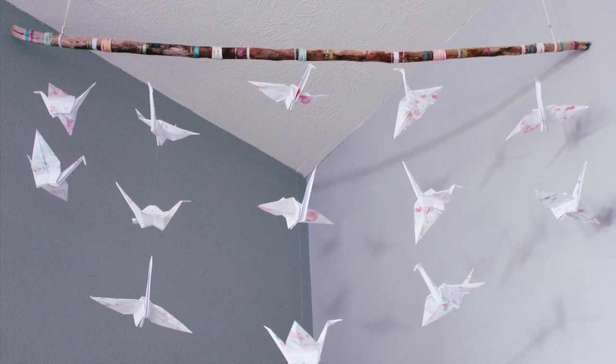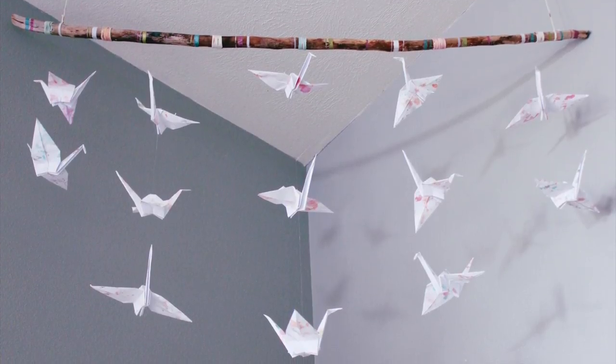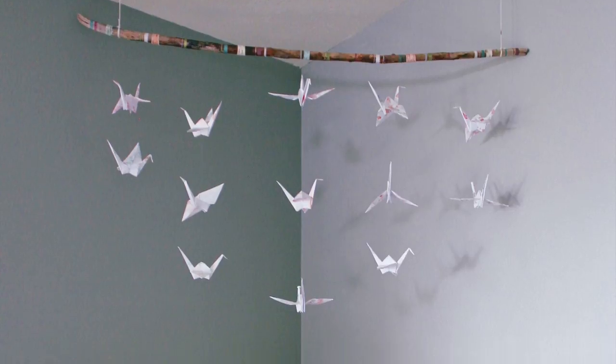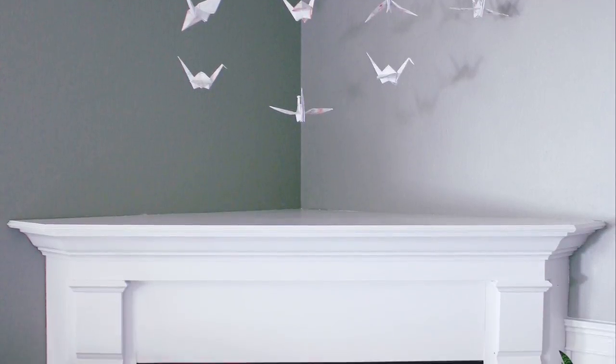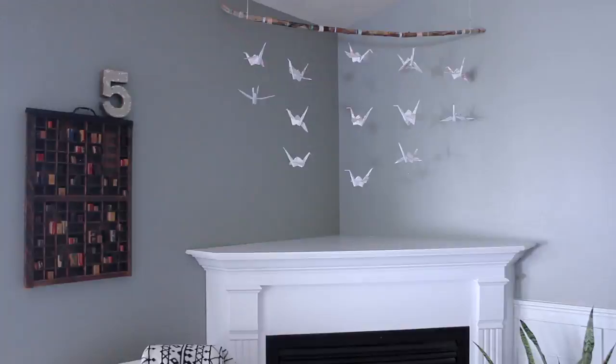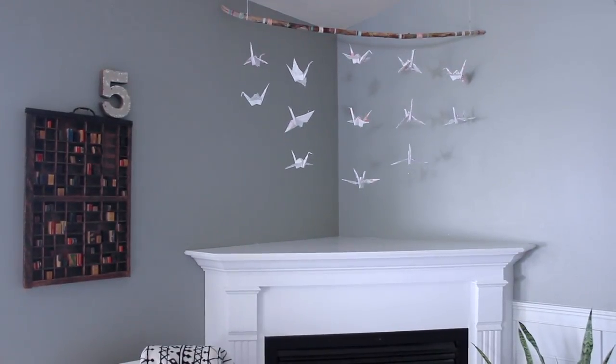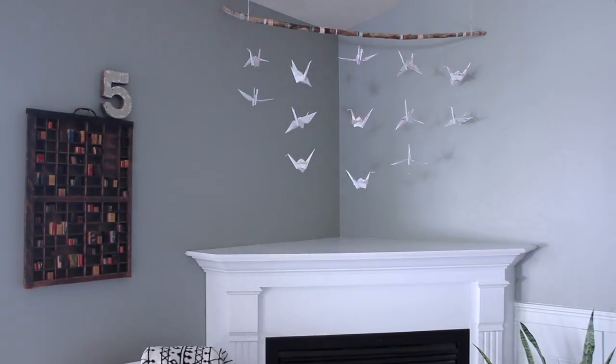Tie the strands to the stick or use a dab of hot glue on the back of the stick to secure it. I found it's easiest to attach these strands when the stick is already hanging in place. I used two ceiling hooks and some yarn to hang the stick over my fireplace. I added five strands of cranes with the longest one being in the center.